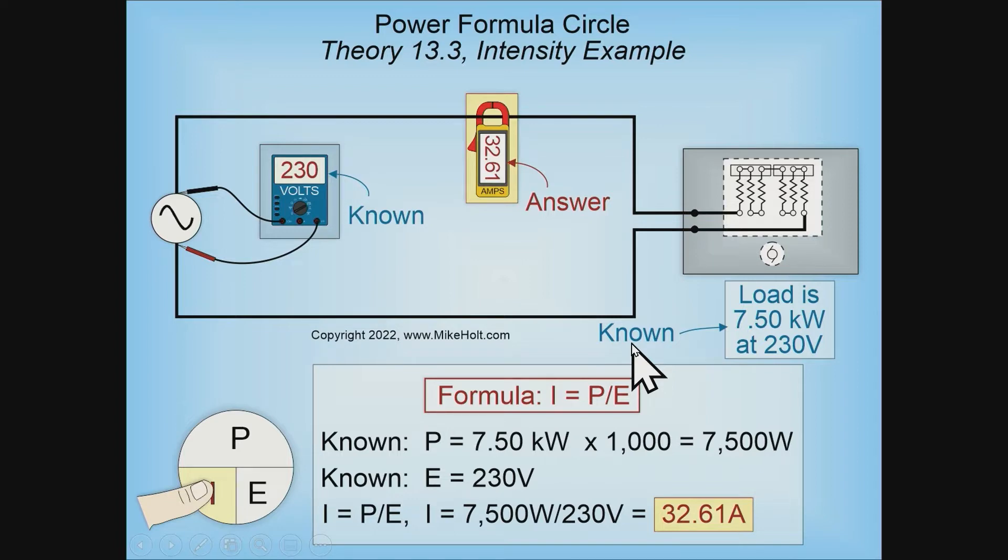All right, let's just take a look at an example of a power formula circle. Here's the wheel, and if I'm looking for the intensity of the circuit, and I know power and voltage, you'd have to know what the knowns are. So what is the power? This is a 7.5 kW, which is 1,000, 7,500 watts of a load.